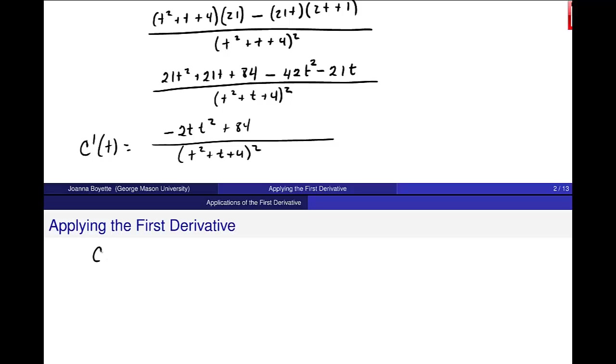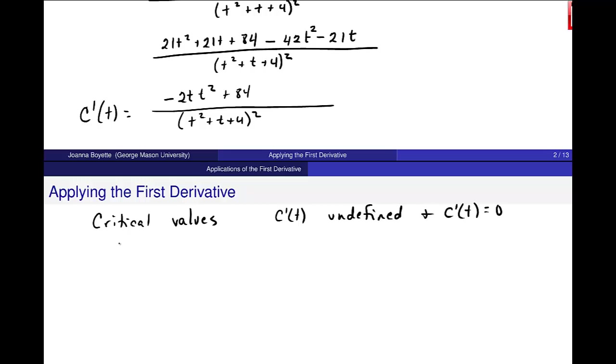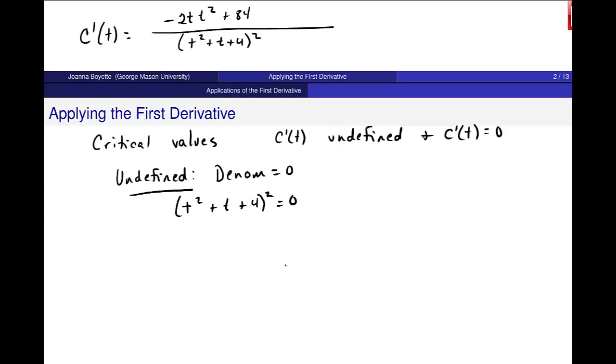And I'm still looking for critical values. I don't want to go off track. So I need to find values where this is undefined and where c prime of t is equal to 0. So let's first find these values where it's undefined, right? That would be where the denominator is 0. So t squared plus t plus 4 squared equals 0. That's the same thing as this inside piece being 0.